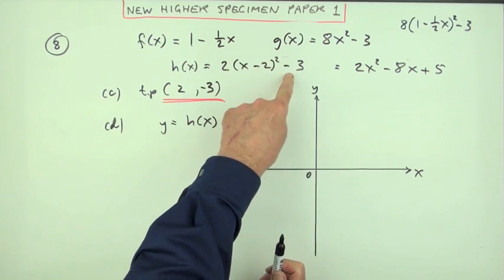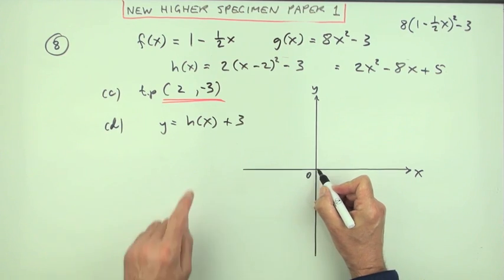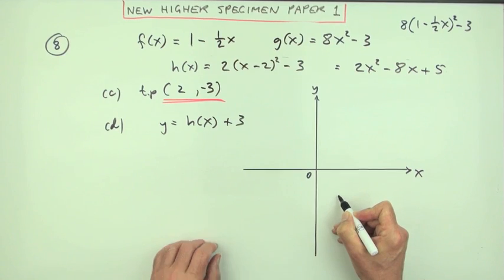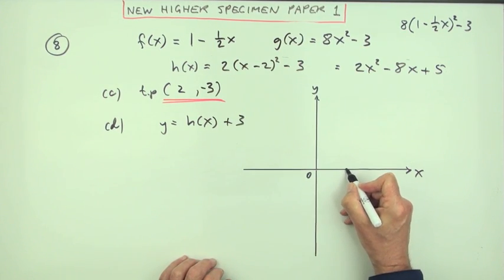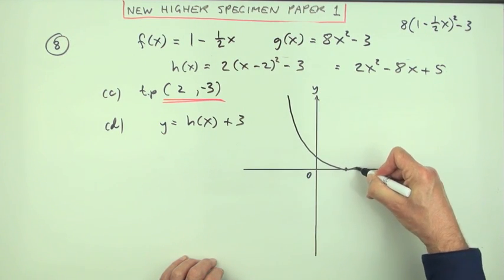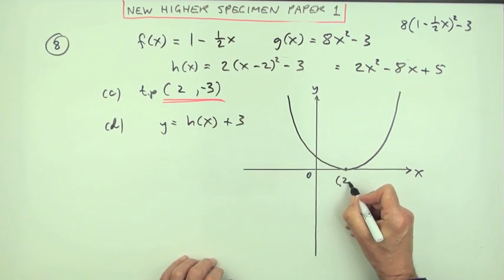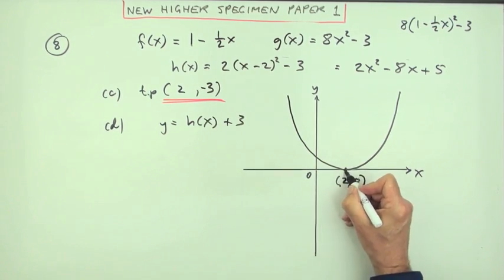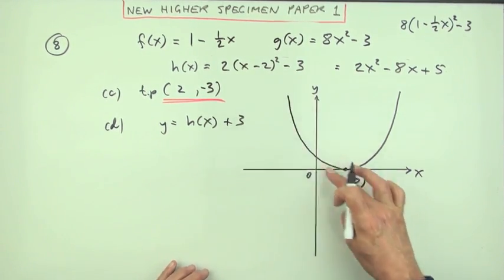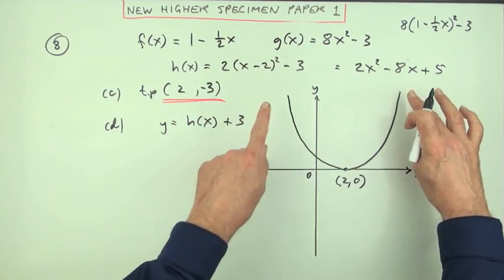So you can either rearrange the equation or just realize it's gone three up. So instead of having a turning point at 2, -3, lifting it three up will make the turning point here. So this graph is going to come down, turn there, and go back up. I'll just put this point in explicitly—that's the point (2, 0). The marks go one for having the correct shape. That's realizing that it's a parabola sitting the correct way around, if you like, heading up positively.